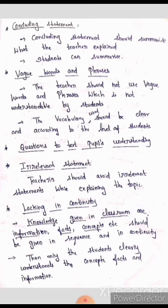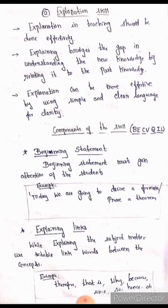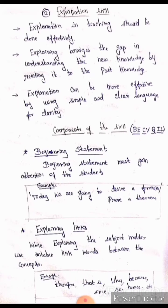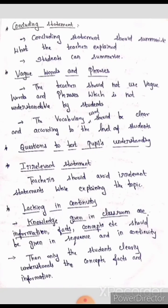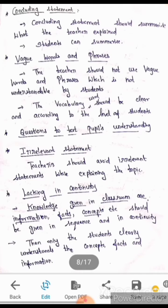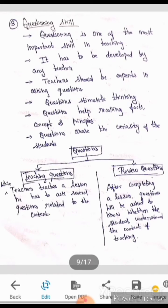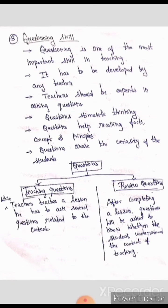This is lacking in continuity. The components of this skill include B, E, C, V, Q, L. Next, the number of skills is questioning skill.